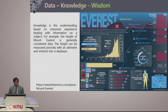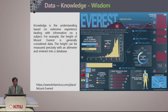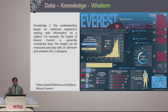Now let's think about how data, knowledge, and wisdom are interrelated. Knowledge is the understanding of data — it is understanding based on extensive experience dealing with information on a particular subject. Let's take this example: the height of Mount Everest is generally considered as data. The height can be measured precisely with an altimeter and entered into a database. Apart from height, you may have several other definitions and types of information.